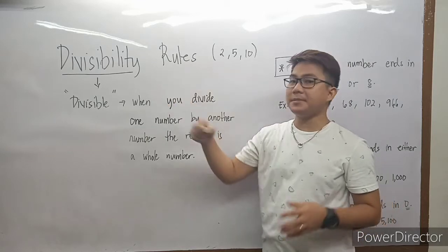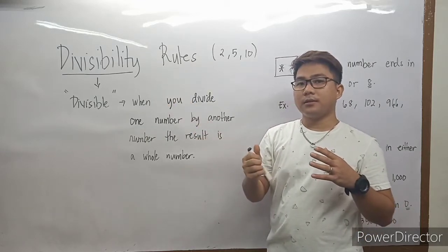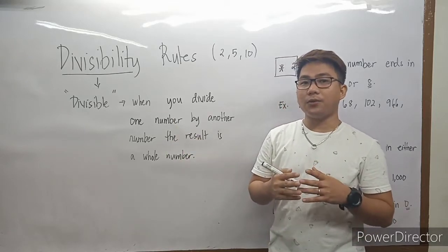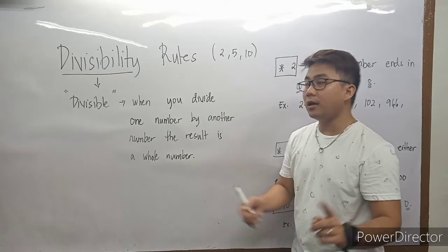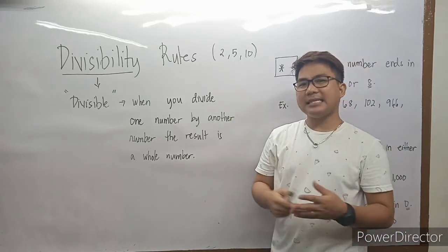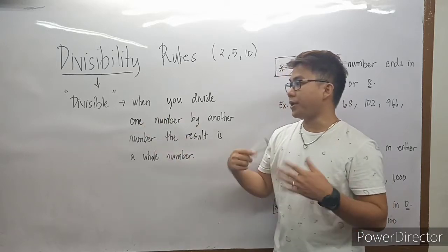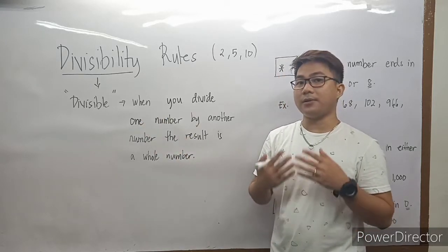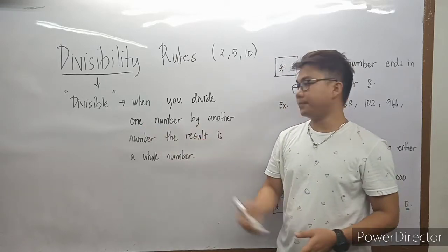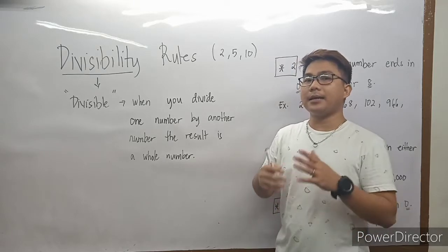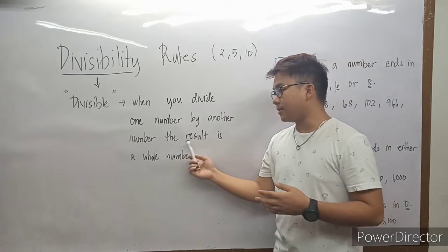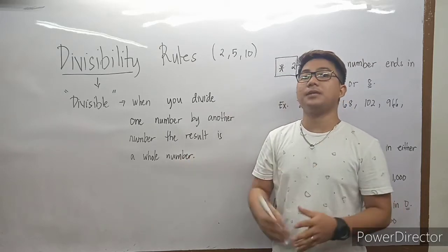Okay tayo doon? So, when we say divisibility, papasok sa atin sa isip yung divisible. When you divide — we are talking about division — kapag nag-divide tayo ng one number by another number, the result is a whole number. Ibig sabihin, kapag yung number na yun ay divide natin sa 2, sa 5, or sa 10, at ang resulting result ay whole number, divisible yung number na yun.